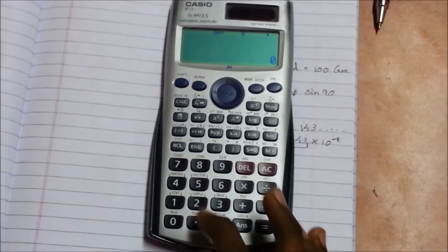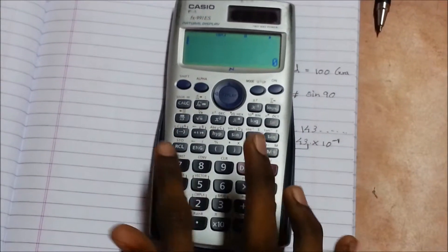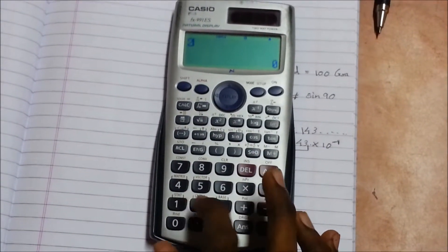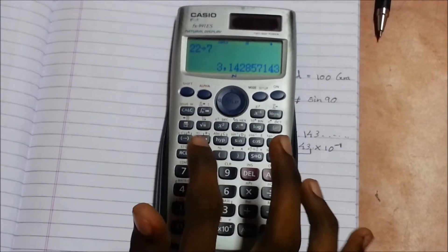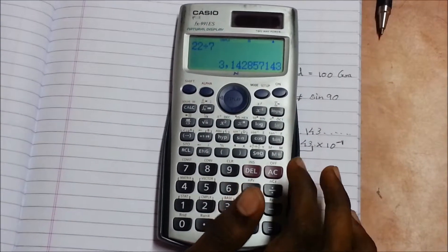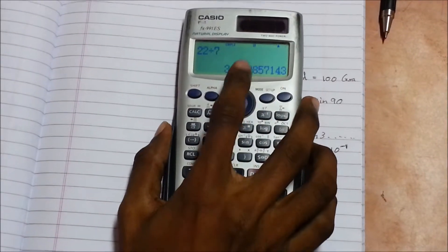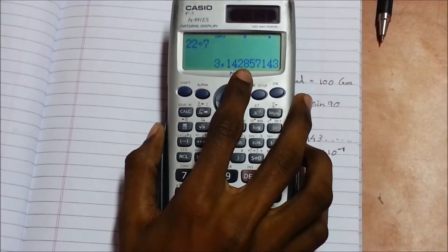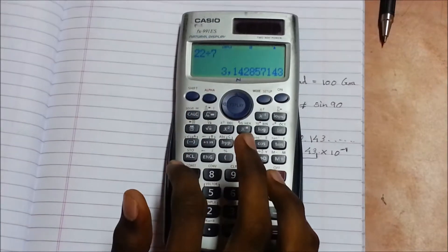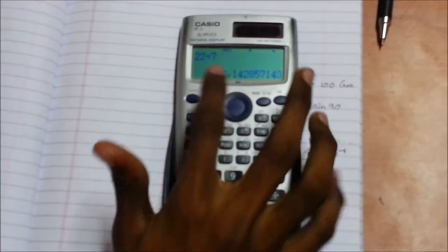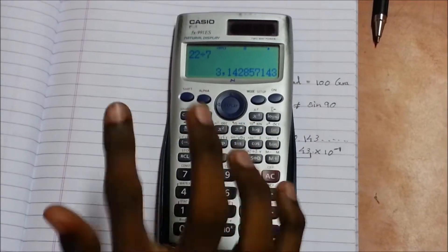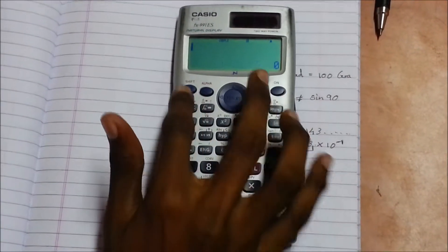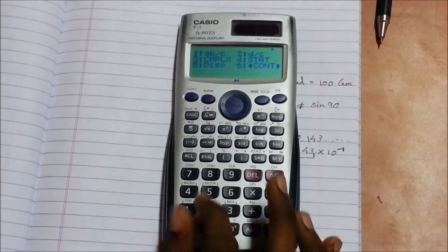Press the 2. Here in this mode, suppose we solve the question 22 divided by 7, you will get the answer as 3.14. Here you can see that it's showing 3 comma 14, that means instead of dot you can see the comma. That is the difference between the dot and comma in the setup display.